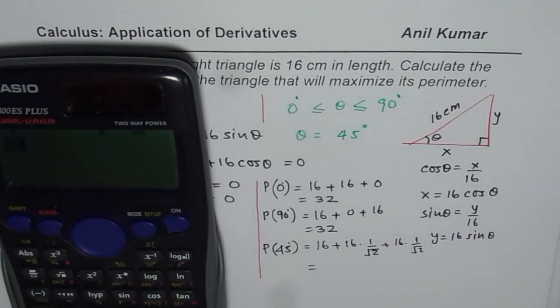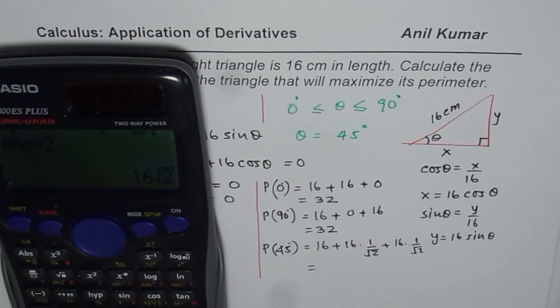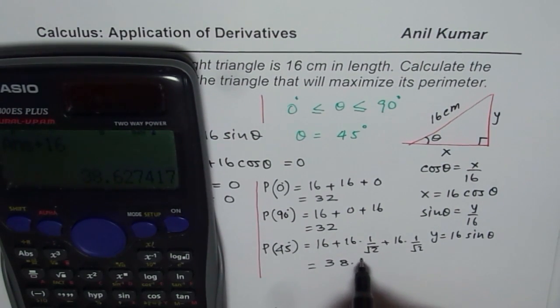So we have 16 divided by square root 2 equals to 8 square root 2, there are 2 of them, so we will multiply by 2 equals to, and then we will add 16. So plus 16 equals to, in decimals, 38.62.